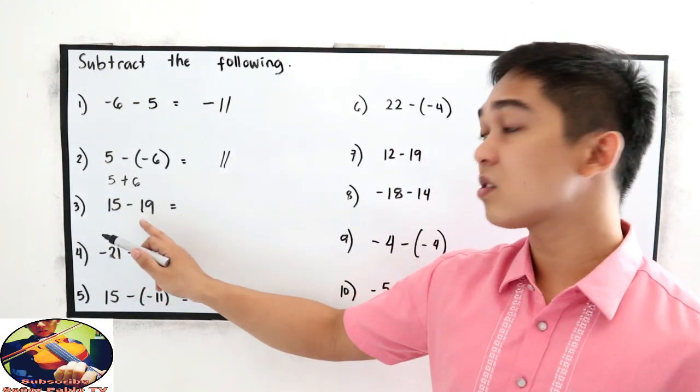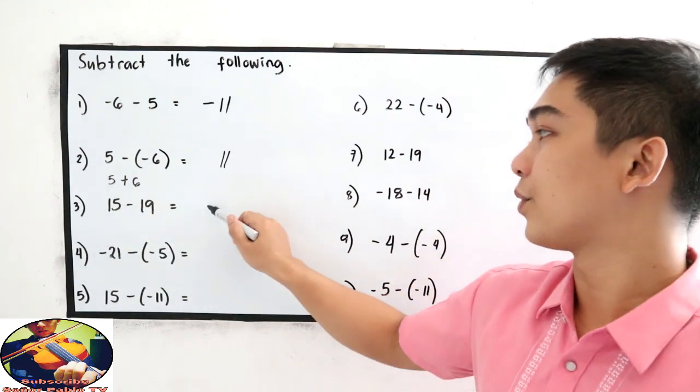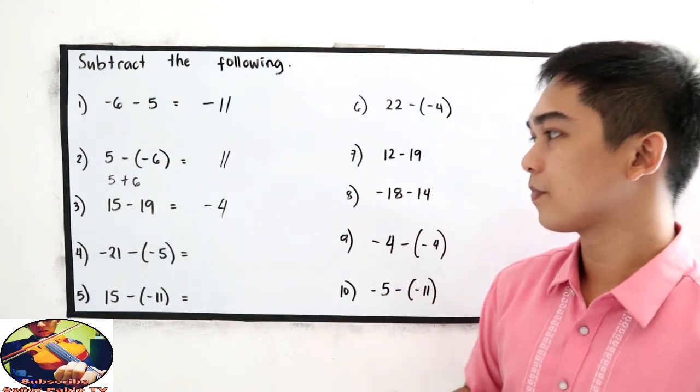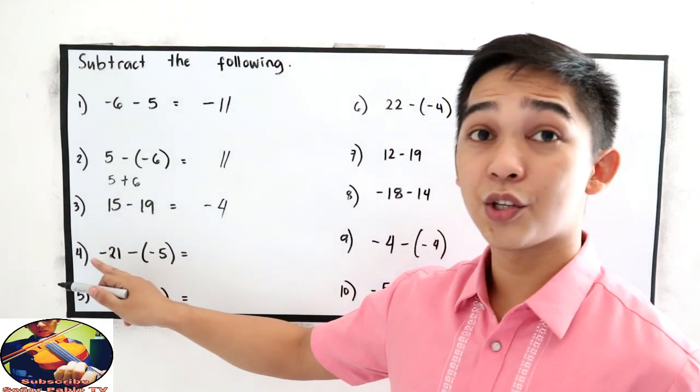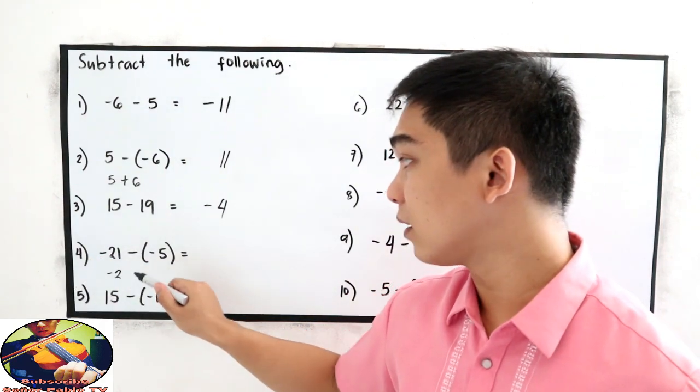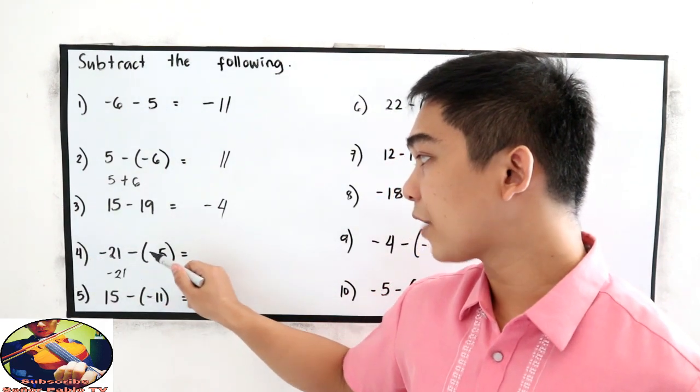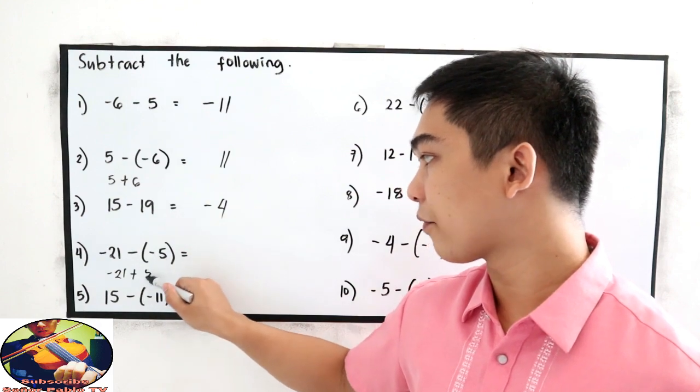15 minus 19, so negative 4. Okay, let us use the shortcut, negative 21, negative times negative, positive 5.